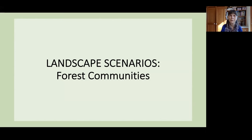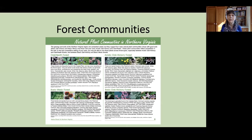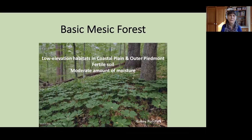This would be if you wanted to try to recreate some of the natural plant communities that exist in Northern Virginia. There are four basic types, and we'll be looking at two of those. The first is the basic mesic forest. This occurs in low-elevation habitats in both the coastal plain and the outer region of the Piedmont, where there are fertile soils and moderate amounts of moisture — that's what mesic refers to. This particular photograph was taken at Turkey Run Park.